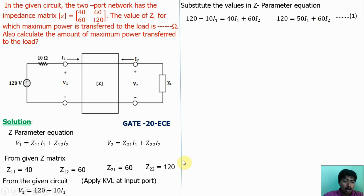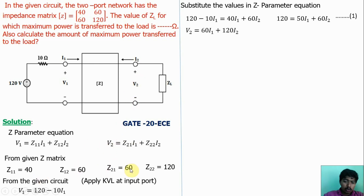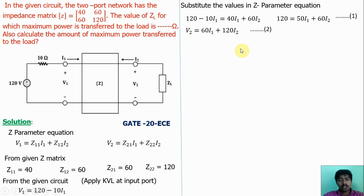Now substitute the Z-parameters into equation 2. V2 = Z21·I1 + Z22·I2, which gives V2 = 60·I1 + 120·I2. Let us take this as equation 2.